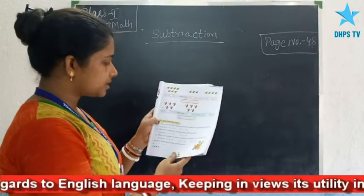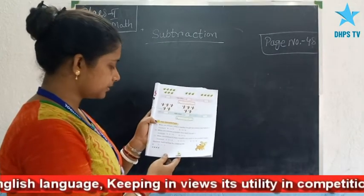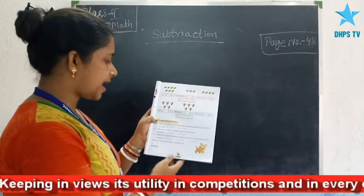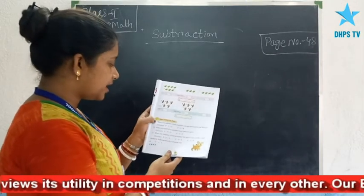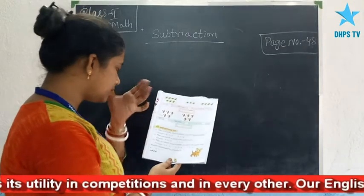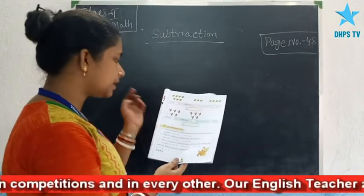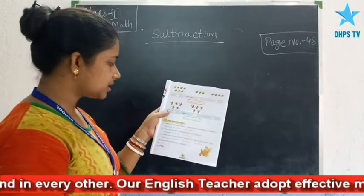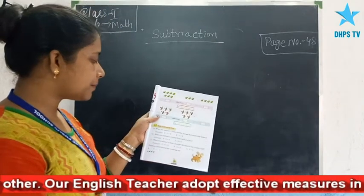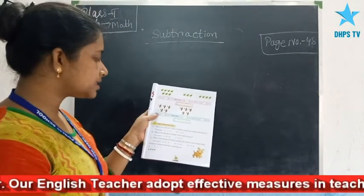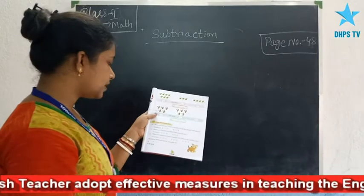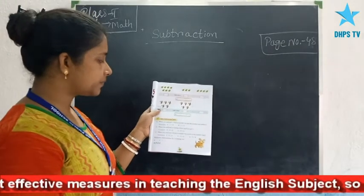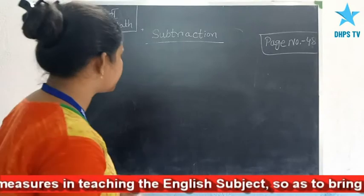Now see the next topic: some subtraction facts. Fact number 1 — when you subtract 1 from a number, you get the number just before it. Fact 2 — when you subtract a number from itself, you get 0. Fact 3 — when you subtract 0 from a number, the result is the number itself.